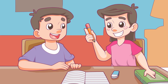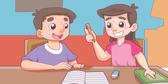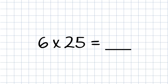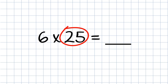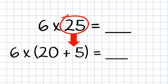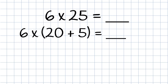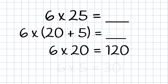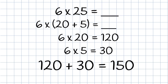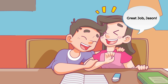Now, let's see how well you understand our quick discussion. Try solving this using the distributive property. Okay, first I'm going to separate 25 into 20 and 5. Then, I will multiply each of them by the other factor, which gives me 120 and 30. Lastly, I will add these together to get 150. Great job, Jason!